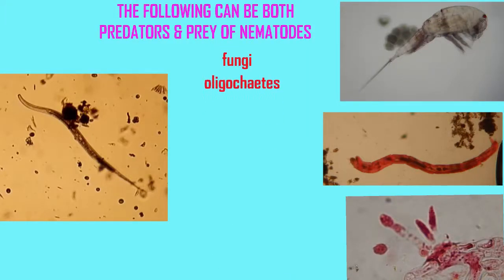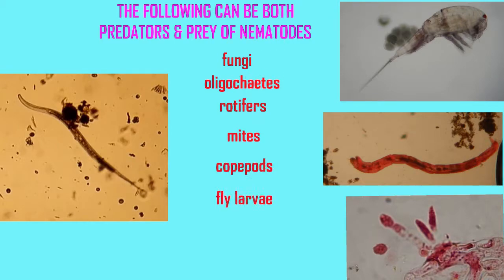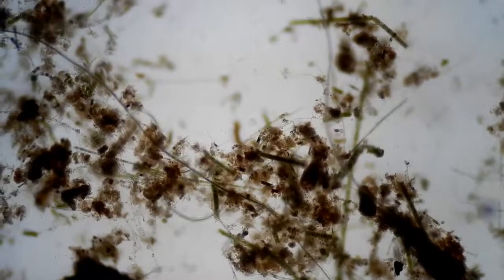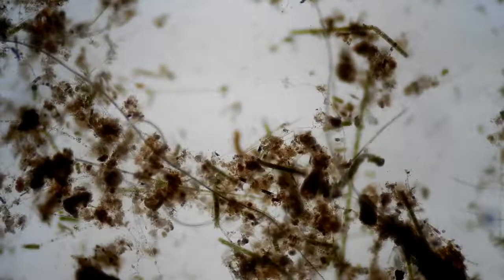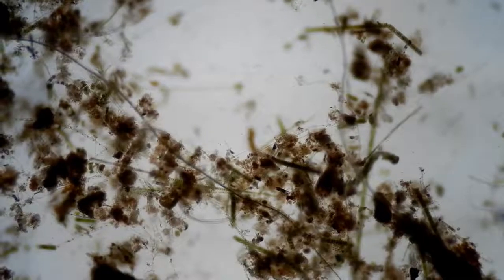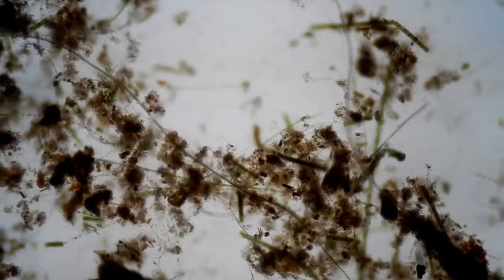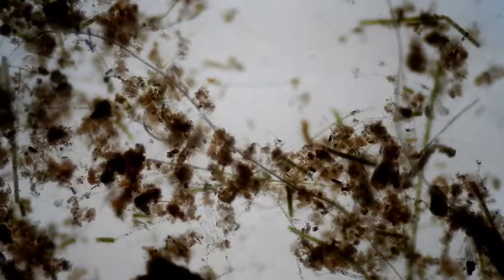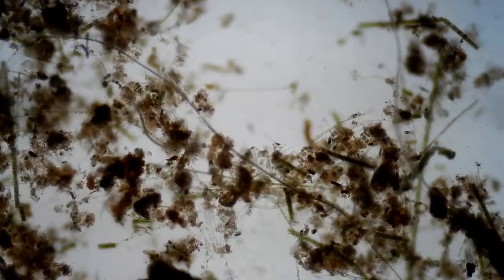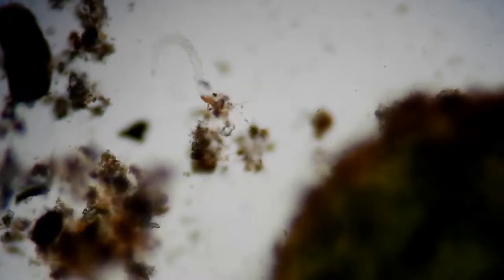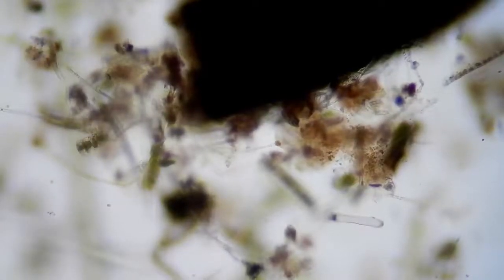Trying to fit the role of organisms as diverse as nematodes into a single ecological box would be difficult. For example, the following organisms can be predators of nematode worms, but other nematode worms may actually feed on them — so the following can be both predators and prey: fungi, oligochaetes, rotifers, mites, copepods, other small arthropods, and fly larvae such as chironomids.